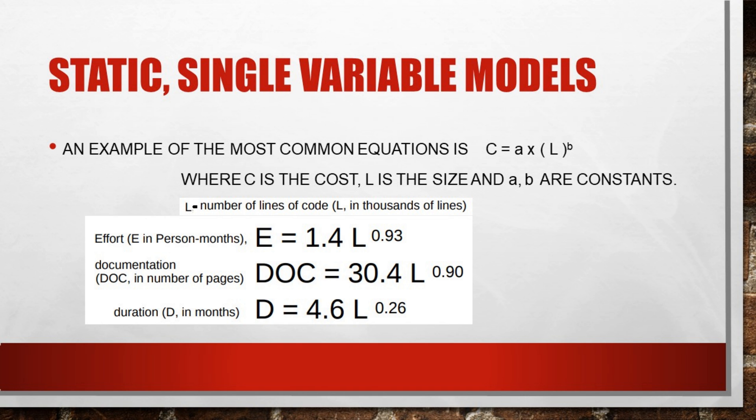Duration D is calculated as D = 4.6 × L^0.26, where duration is measured in months. The variable L is the predictor — the size of the project — measured as number of lines of code in thousands, as per the SEL model.